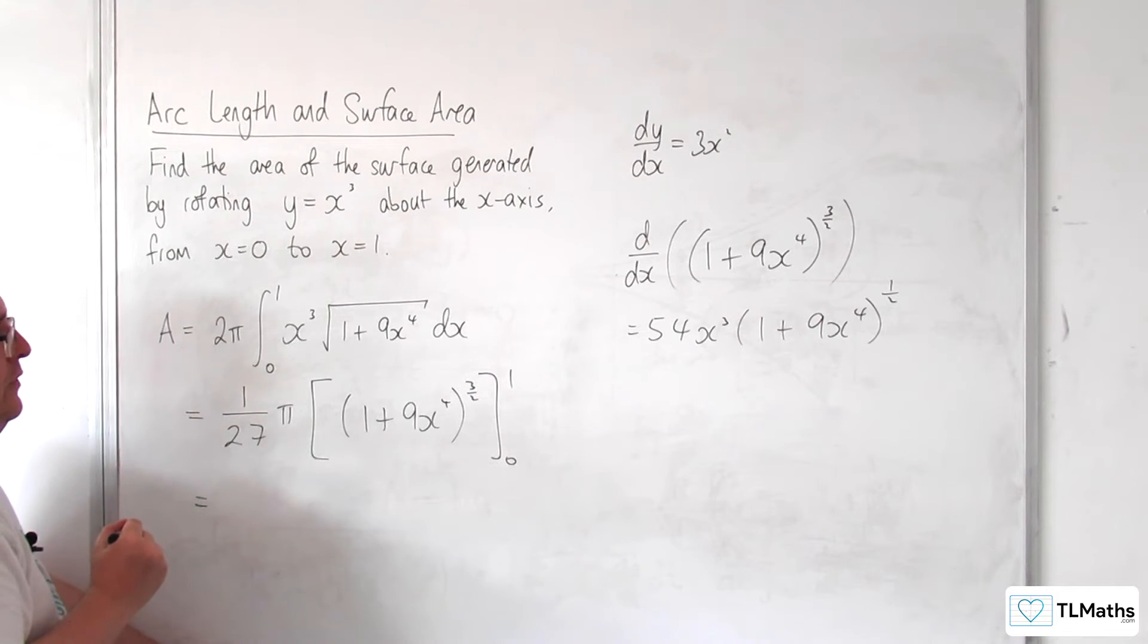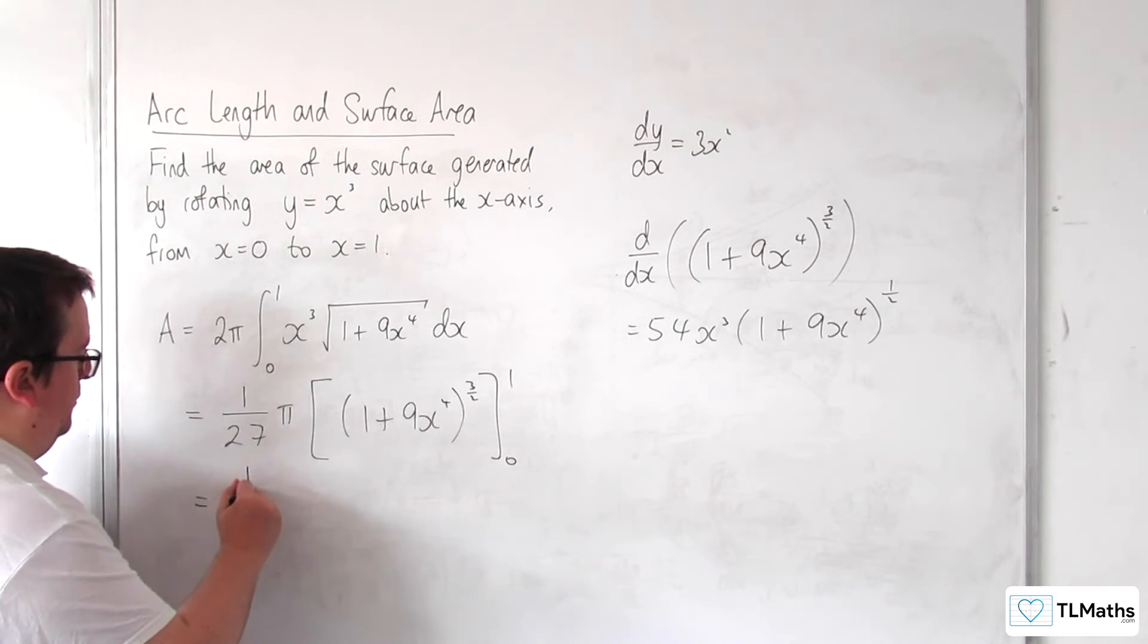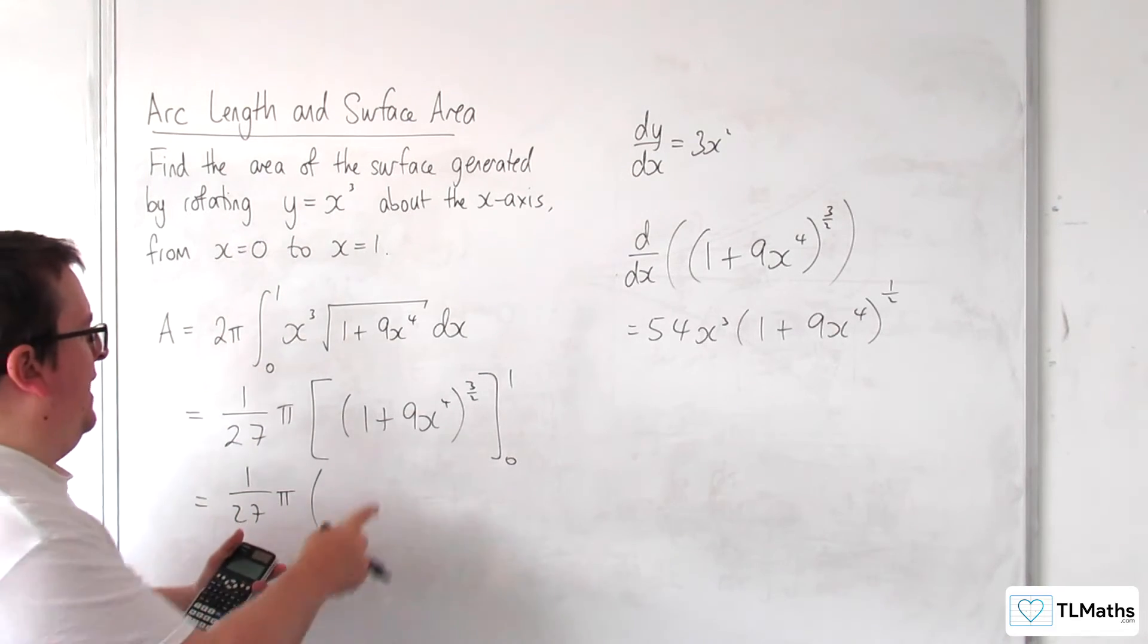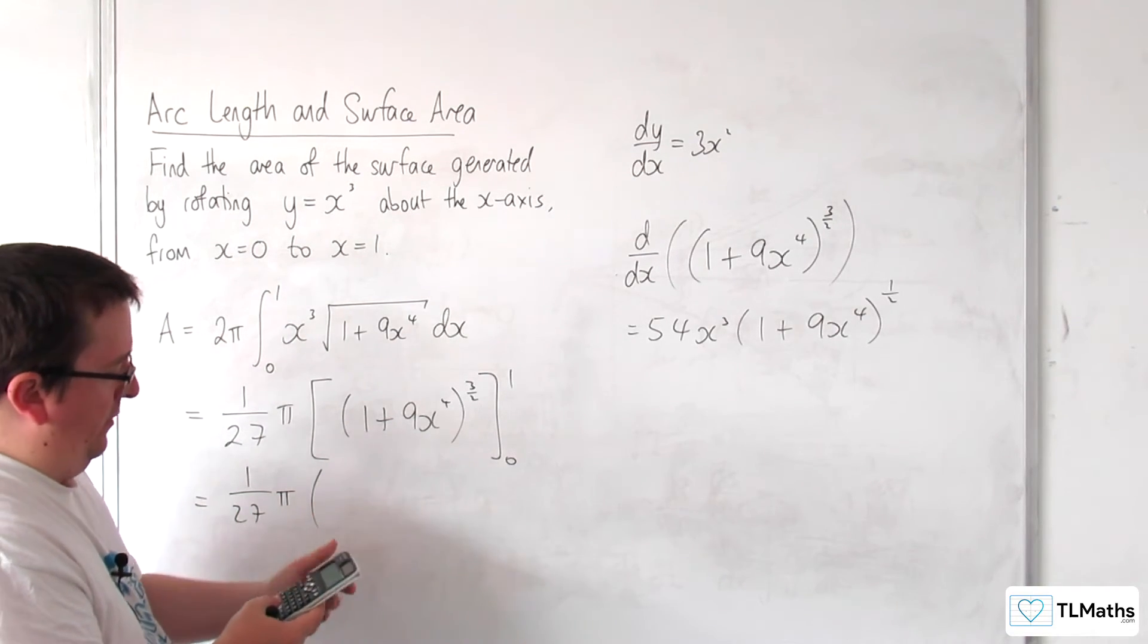Okay, so now I've got to substitute in the 1. So I've got 1 over 27 pi times by, so I'm going to get 1 plus 9, so 10 to the power of 3 halves.